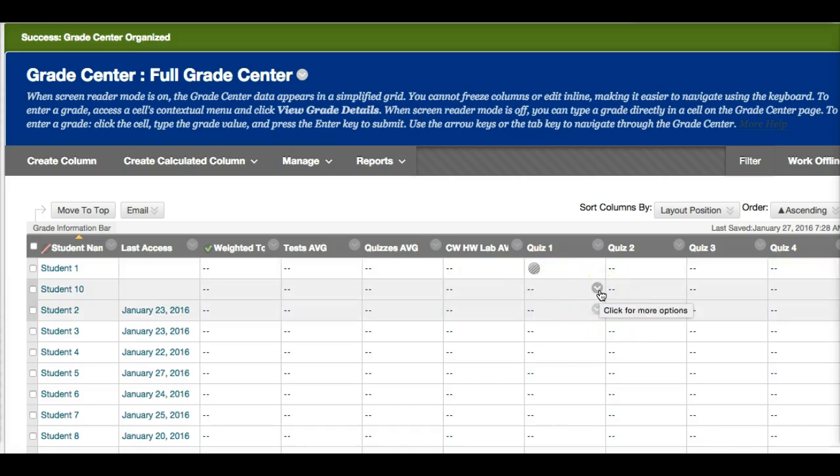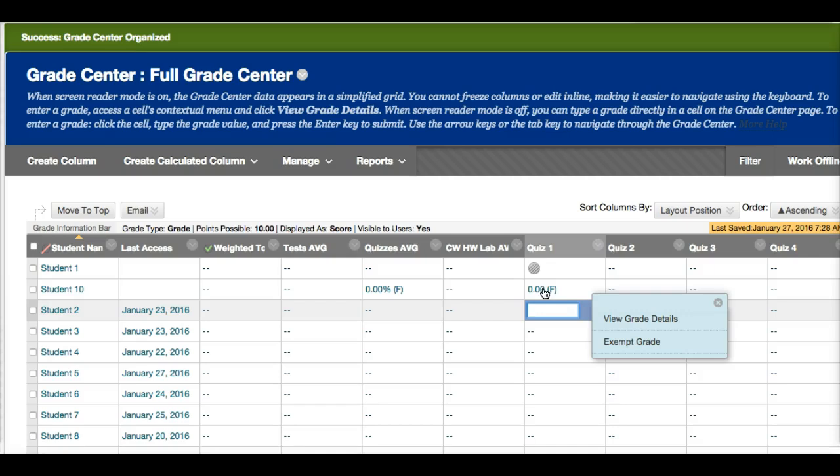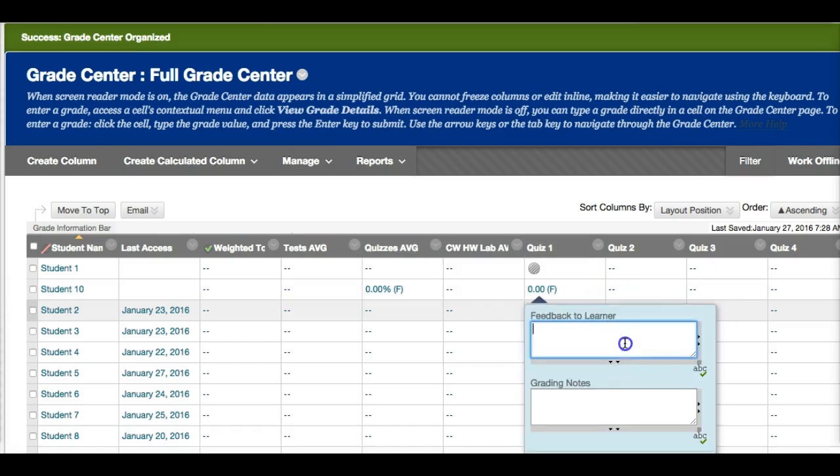If you want to give a comment to a student, maybe that student got a zero for a quiz. After you enter the grade, when you click on the arrow, quick comment, you can just say absent, missed quiz. And so that way the student can see why they got a zero.